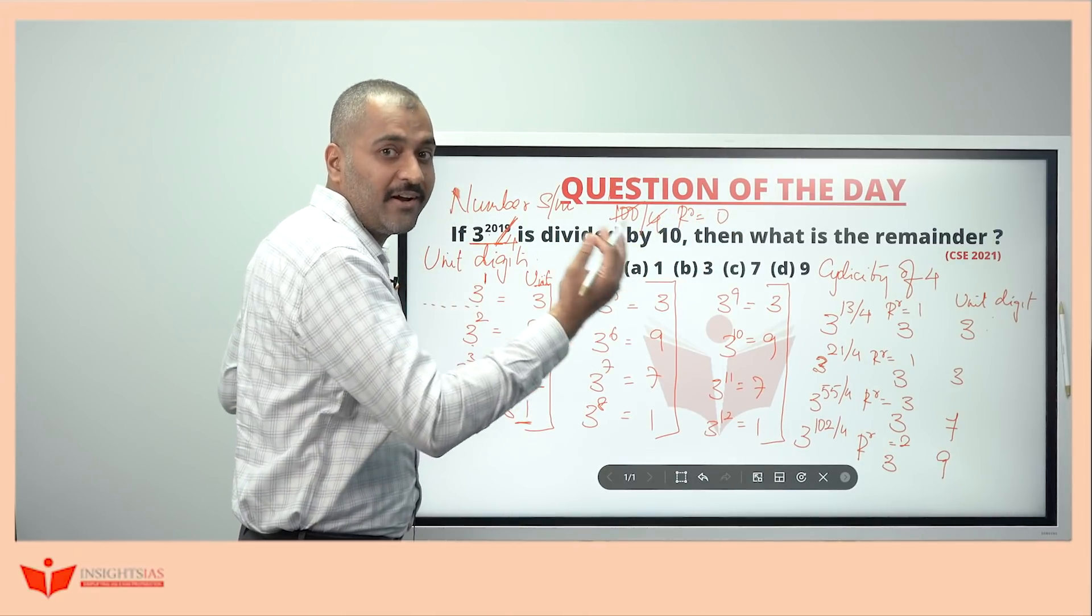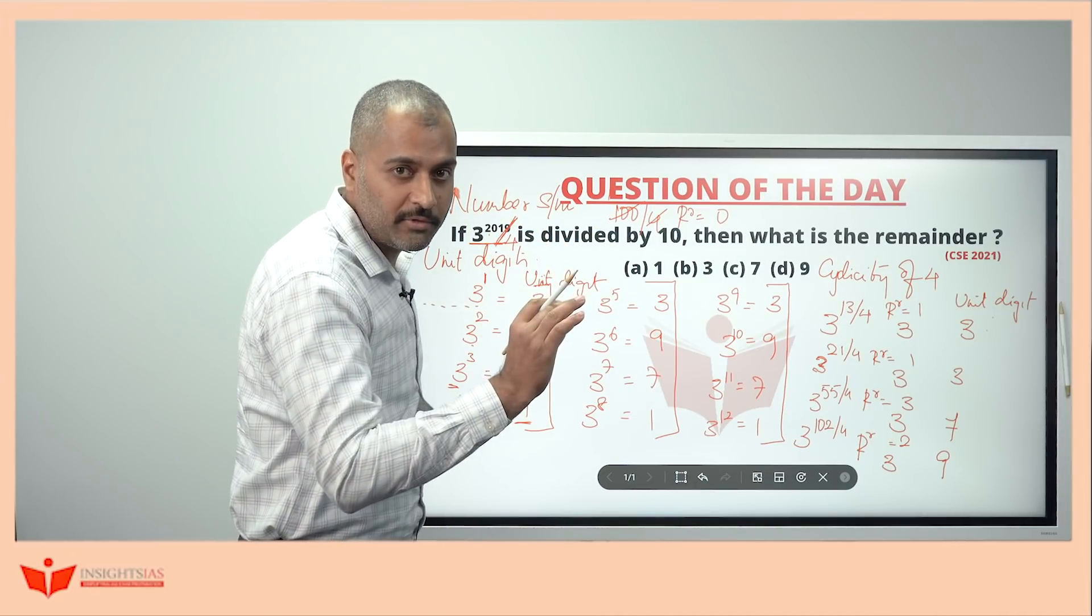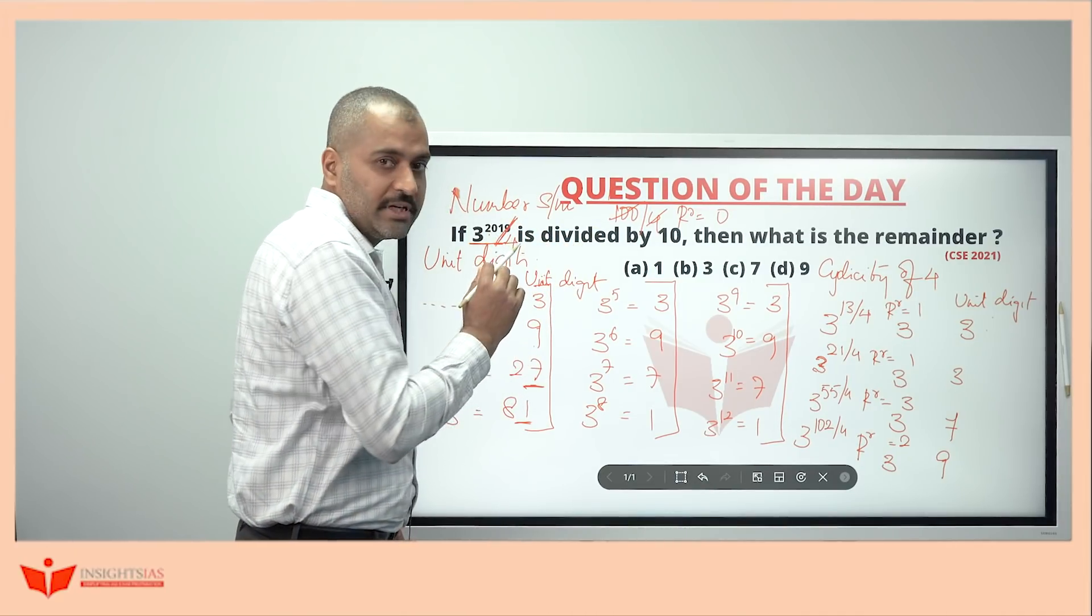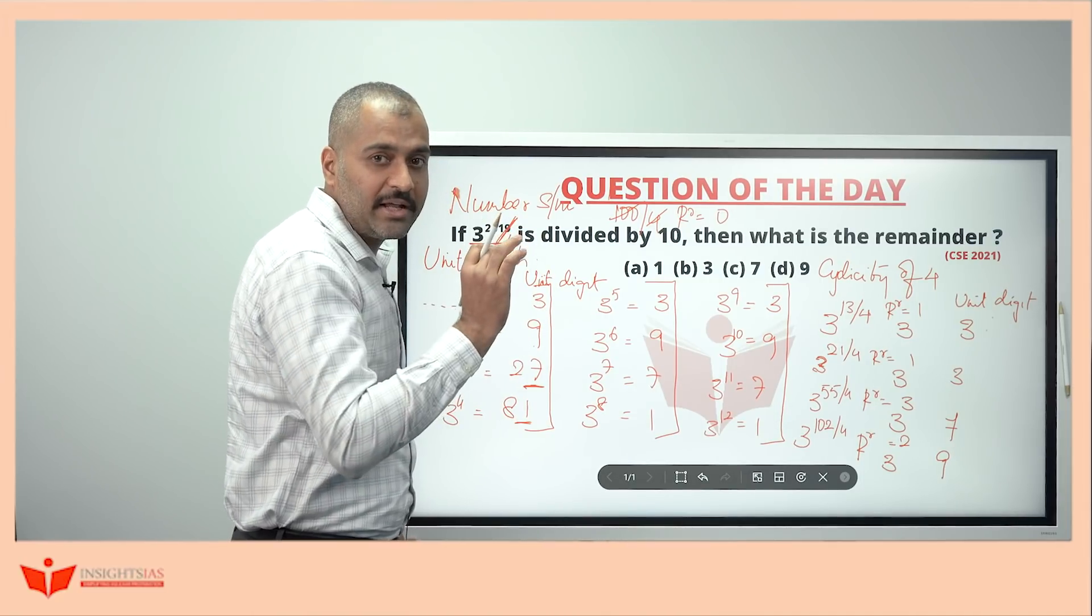300, yes. 500 is yes. 1000 also divisible by 4. 2000 also get divided by 4. After 2000, it is 19. When I am trying to divide 19 by 4, remainder I will get is 3.